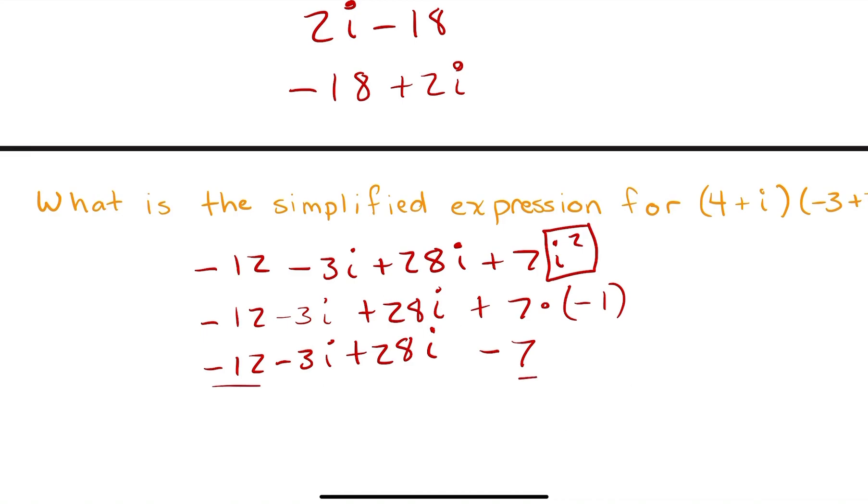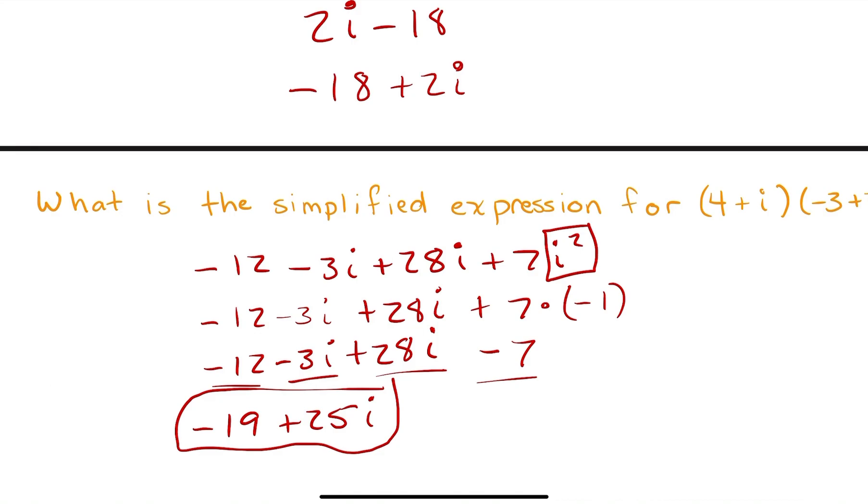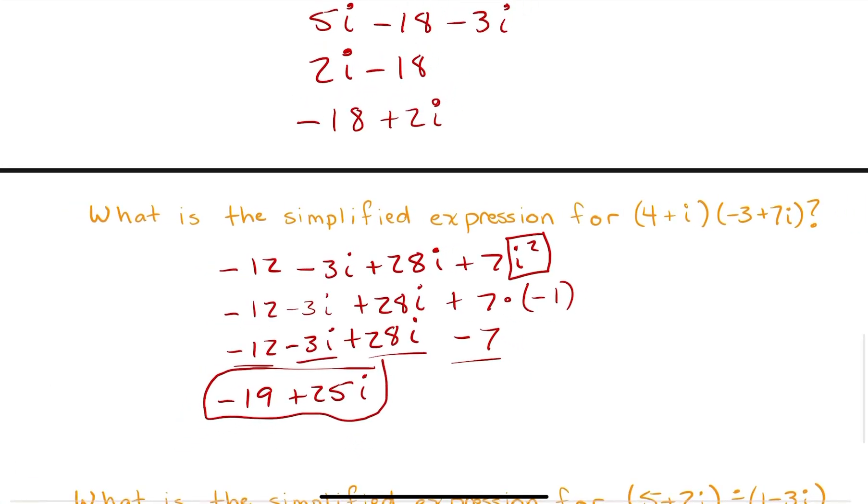My constant terms, negative 12 and negative 7, should kind of come together and give me negative 19. And then if I combine my imaginary terms, those are going to give me positive 25i, just because 28i minus 3i should give me 25i. Now, this is already in the format that I want it. This looks exactly like a plus bi. And that's the most simplified version of this expression. So hopefully you feel pretty good about the FOIL method.